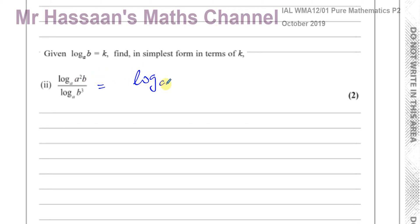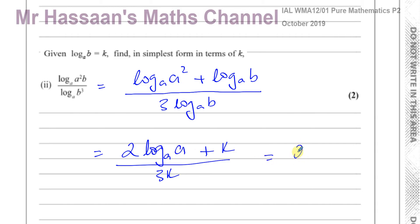So you've got log to the base A of A squared plus log to the base A of B divided by, and this is going to be, using the power law, 3 log to the base A of B. So straight away, we've got log to the base A of B, that's going to be K, that's going to be 3 times K. And we can use the power law here, so 2 times log to the base A of A plus K over 3 times K. And we know that log to the base A of A is 1, so you've got 2 plus K divided by 3K, and there we have our answer. 2 plus K over 3K, very simple, applying the laws of logarithms to this question.